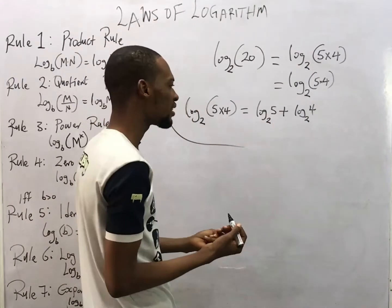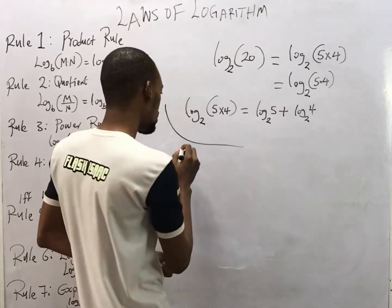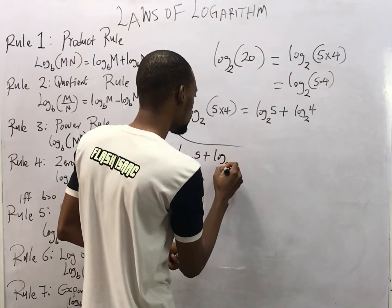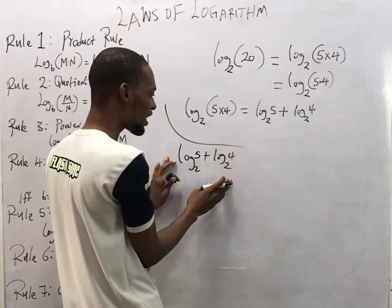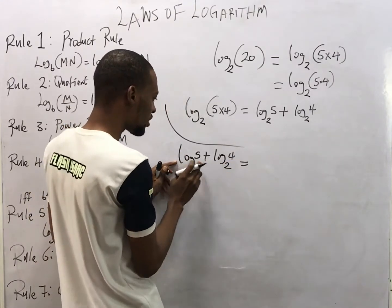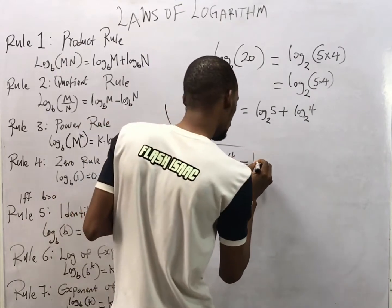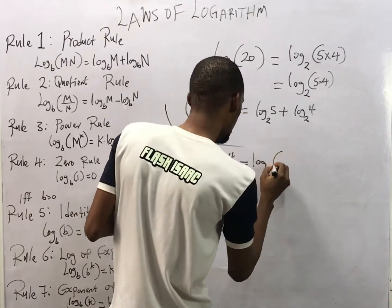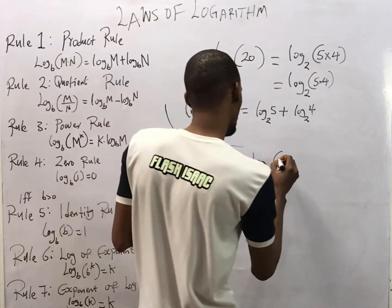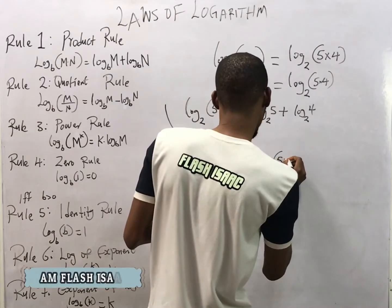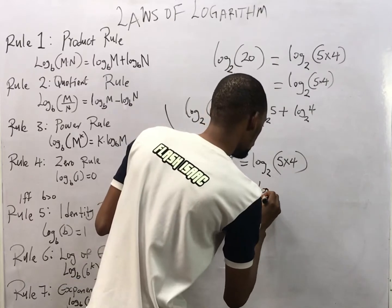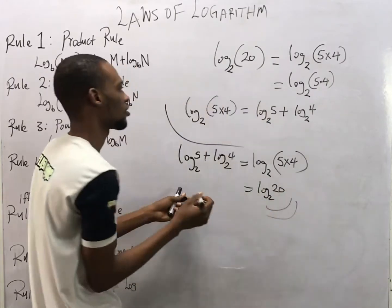This also implies the reverse: if you are given log base 2 of 5 plus log base 2 of 4, since the bases are the same you pick one base and multiply the arguments. So log_2(5) + log_2(4) equals log base 2 of (5 times 4), which is log base 2 of 20.